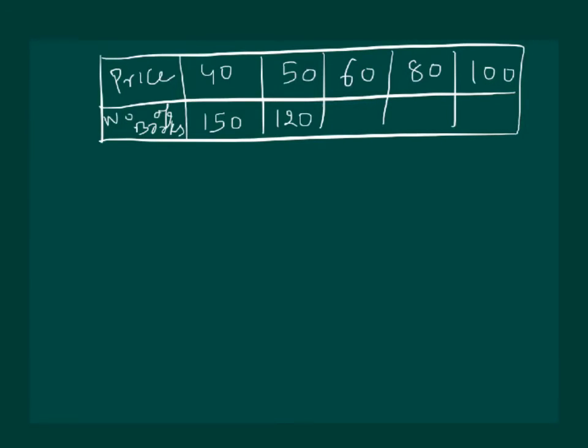Then similarly calculate for Rs. 60, it will come out to be 100 books. For Rs. 80, it will come out to be 75 books and for Rs. 100, it will come out to be 60 books.